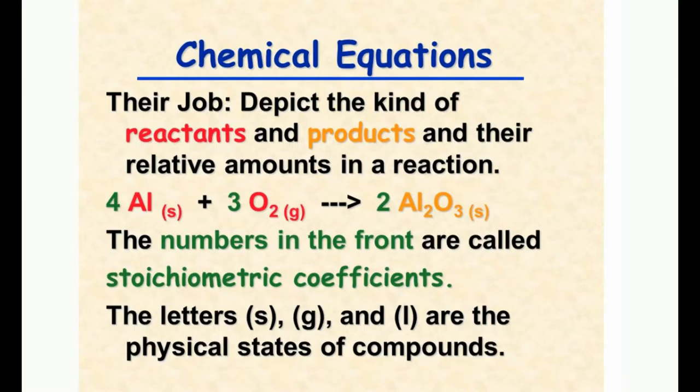Reactants are on your left and products are on your right. The S, G, and L notation tells you the state of matter: S is solid, G is gas, L is liquid. What we really care about are the whole numbers in front — the ratio. For example, aluminum: how many aluminums on the left? Four. On the right you see two, but times the coefficient of two — two times two is four. So the coefficients distribute over the subscripts. How many oxygens? Three times two is six on the left, and two times three is six on the right — same.